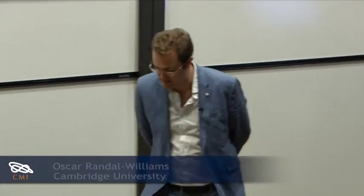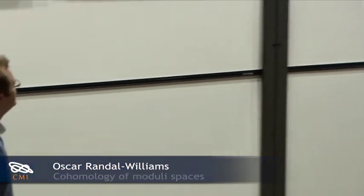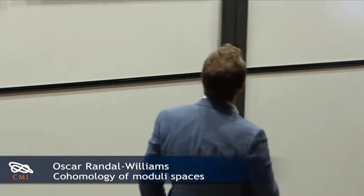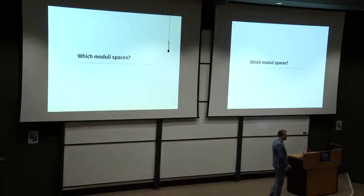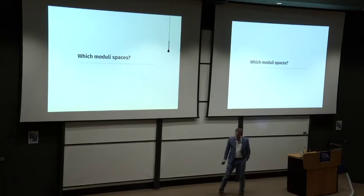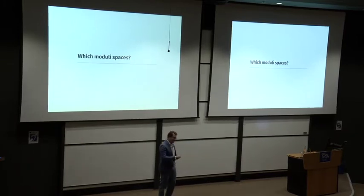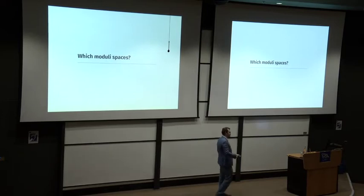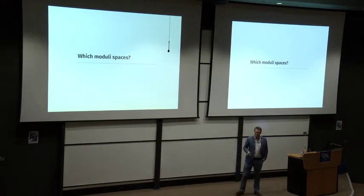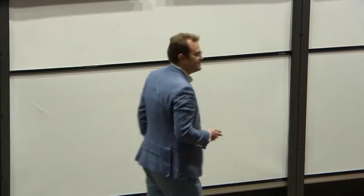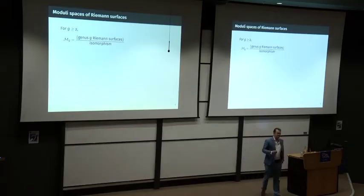Thank you very much, Mike, for the introduction and for giving away about 60% of my talk. I want to explain some methods that topologists have come up with in the last 20 years for dealing with certain moduli spaces, but I first need to explain what sort of moduli spaces I have in mind. I'm not going to mention anything from the point of view of algebraic geometry. The motivating example is the first, original, and best moduli space: the moduli space of Riemann surfaces.